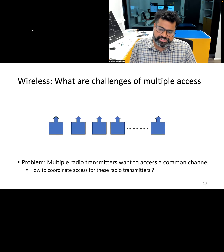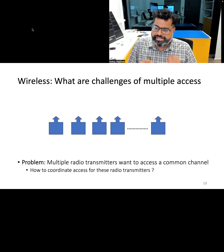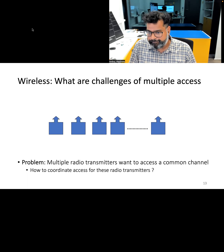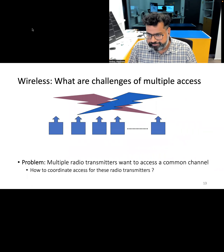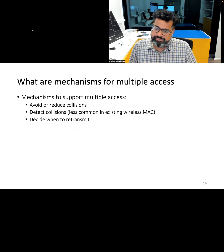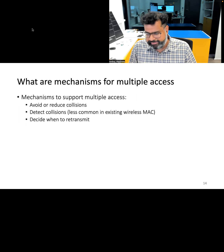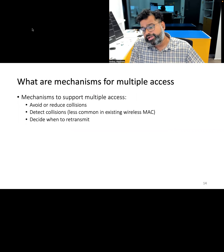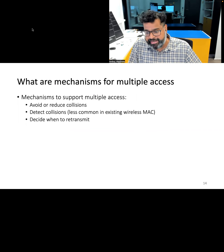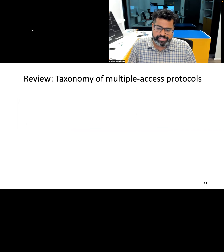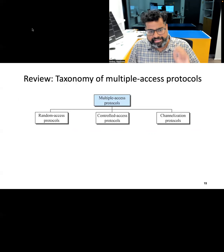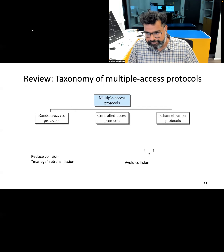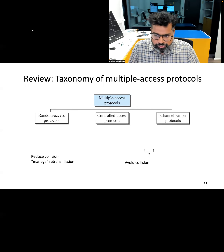The central issue addressed in this lecture is coordinating access for multiple radio transmitters sharing a common channel or medium, ensuring efficient and reliable communication without interference. To implement a multiple access scheme, mechanisms can be employed to avoid or reduce collisions, detect collisions, or determine when to retransmit. Many MAC-layer protocols use one or more of these strategies. These MAC protocols are divided into categories: random access protocols, controlled access protocols, and channelization protocols — some of which reduce collisions and some of which avoid them entirely.